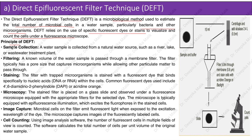Its principle begins with sample collection: a water sample is collected from a natural water source such as a river, lake, or wastewater treatment plant. A known volume of the water sample is then passed through a filter membrane, which typically has a pore size that captures microorganisms while allowing other particulate matter to pass through.